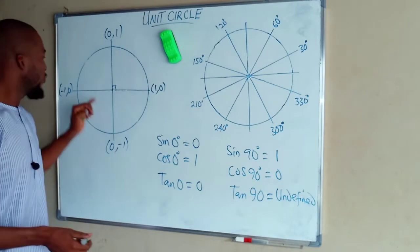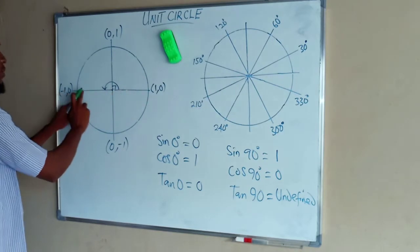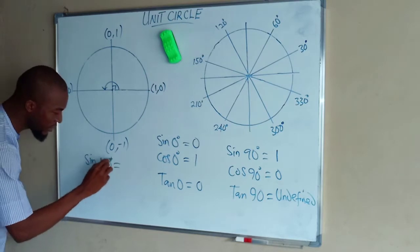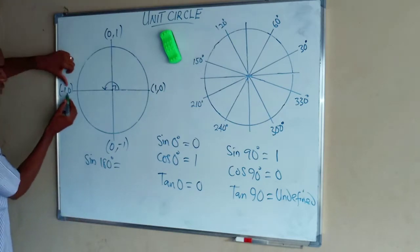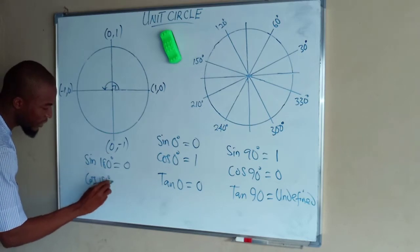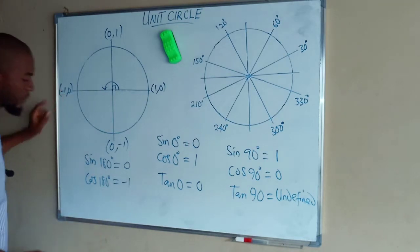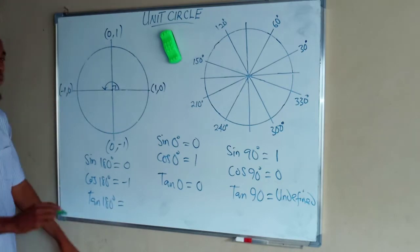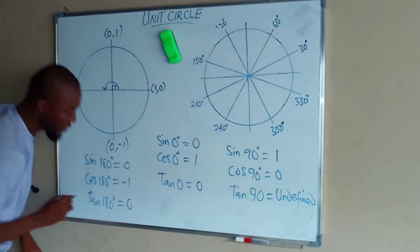Moving on to angle 180°, which goes from the origin to the negative x-plane: sine of 180° depends on the corresponding value of y, which is 0. Cos of 180° depends on the value of x, which is negative 1. And tan 180° is sin over cos: 0 divided by negative 1, which is equal to 0.